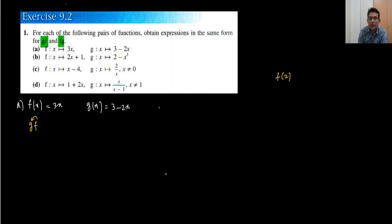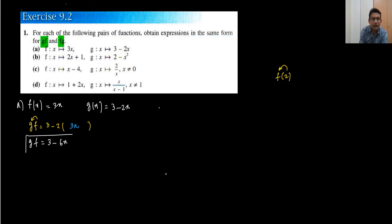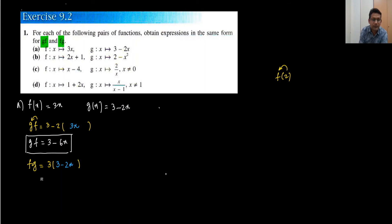Just like when f(2) means we substitute 2 into f, now we substitute f into g. I copy the equation of g first: 3 - 2 times, and in the bracket I write the whole equation of f which is 3x. When we simplify: 3 - 6x. That's gf done. For fg, we substitute g into f — I copy f(x) = 3x and put the whole equation of g in place of x: 3(3 - 2x) = 9 - 6x. That's fg.